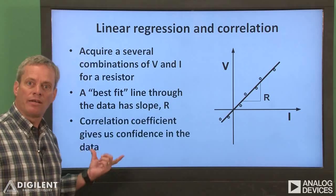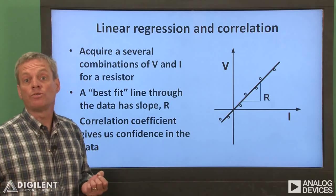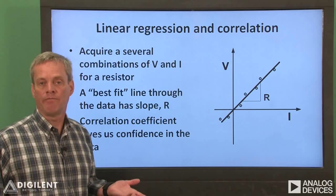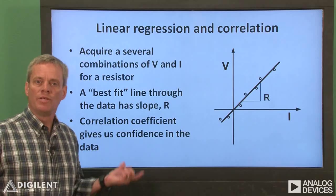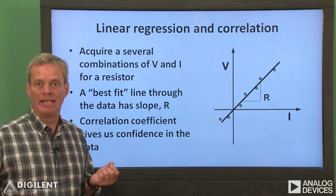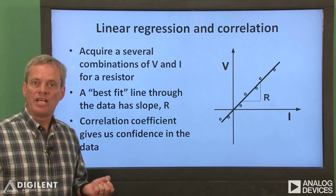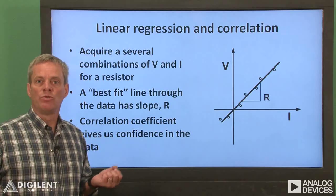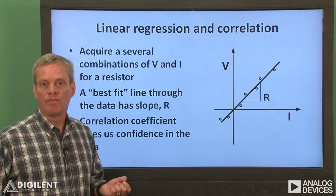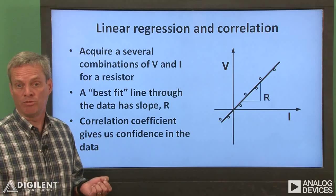This gives us a lot more confidence that our estimate of the resistance doesn't have any severe errors. Even better, we can calculate a correlation coefficient to get a quantification of our degree of confidence in our estimate. We also have the opportunity to identify and discard outlying data points which we have very low confidence in. The circuit used to perform this approach is exactly the same as our previous circuit, except that we need to be able to apply different supply voltages. Therefore, the only change is that we'll use the waveform generator channel to apply the supply voltage rather than V+.